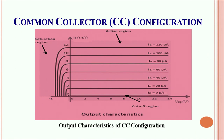Thus the common collector configuration is rarely used. Of the three configurations discussed, the common emitter configuration of the transistor is used in most cases — for devices where we use transistors as amplifiers, switches, or oscillators. The common base configuration and the common collector configuration are rarely used for specified purposes.